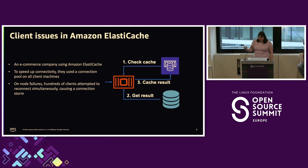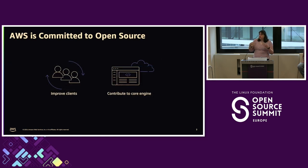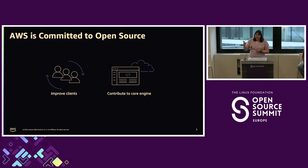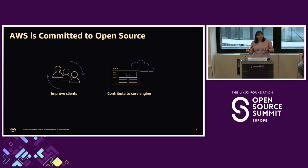We had a customer with this problem, and so we did what AWS does and tried to fix it. In this specific case, we did a lot of open source work to make it better. We went to the client they were using and implemented exponential backoff, which made it so the client was able to more easily reestablish connections and lessen the load so the cache was able to come back up. We also made contributions to the core engine so it prioritized existing connections over accepting new ones, and wrote blog posts to educate users on how to set up connection pools.